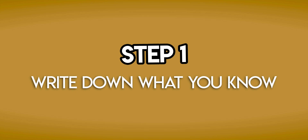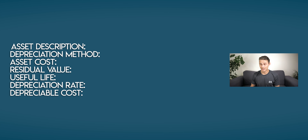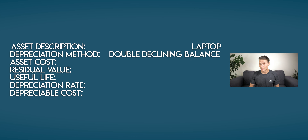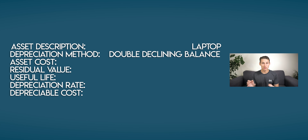Step 1: write down what you know. Your new asset is a laptop and we're depreciating it using the double declining balance method. Your asset cost is what you initially paid for it — $2,500.